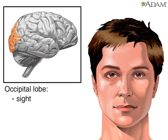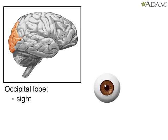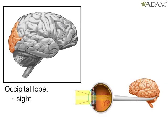The occipital lobe is located at the back of the head, behind the parietal and temporal lobes. The occipital lobe analyzes visual information from the retina and then processes that information. If the occipital lobe becomes damaged, a person could become blind, even if his or her eyes continue to function normally.